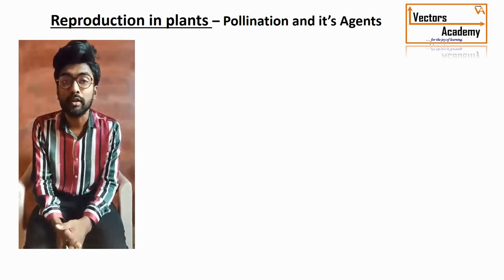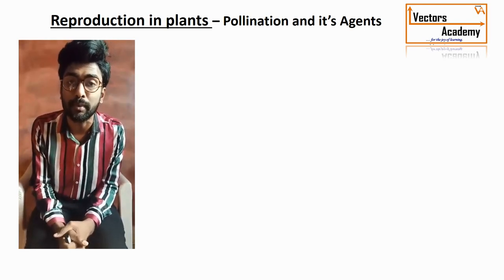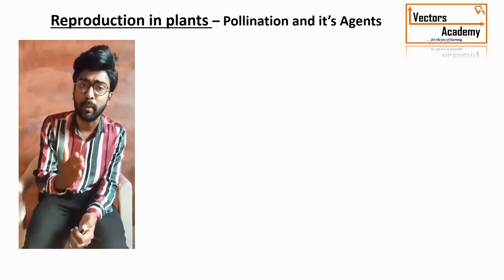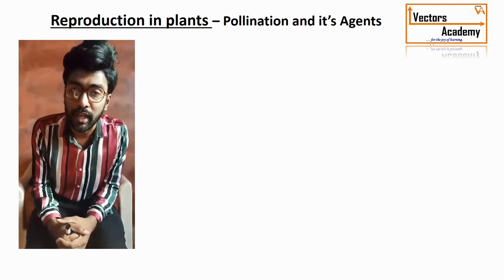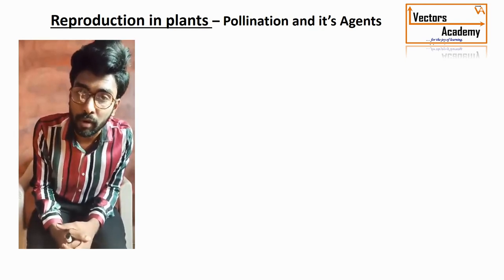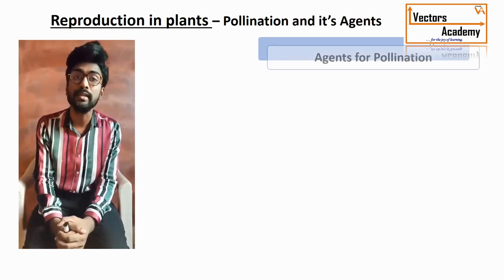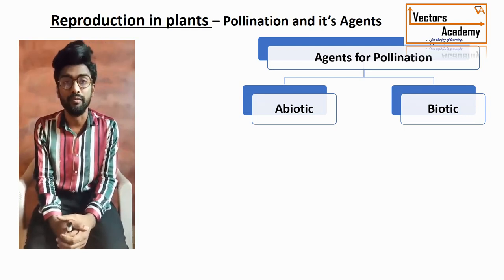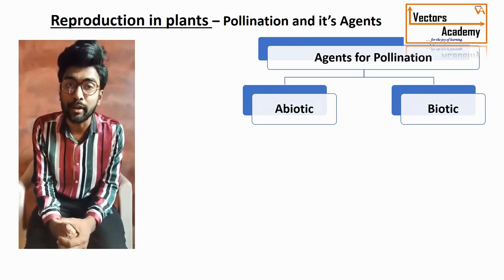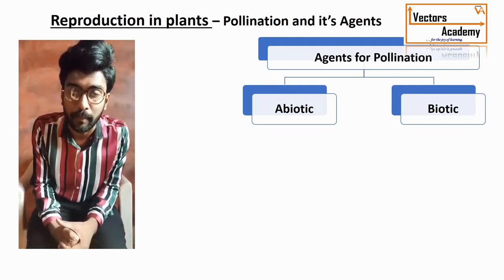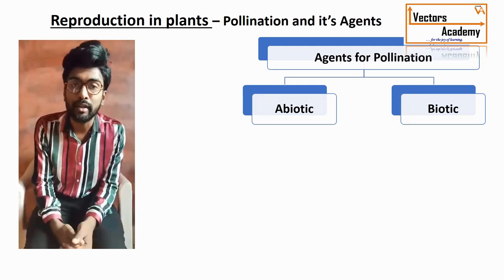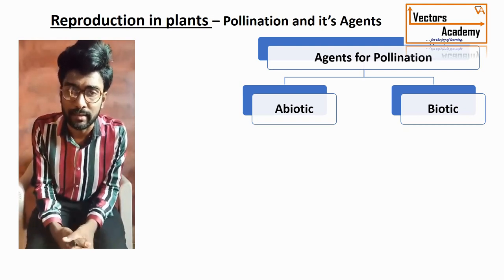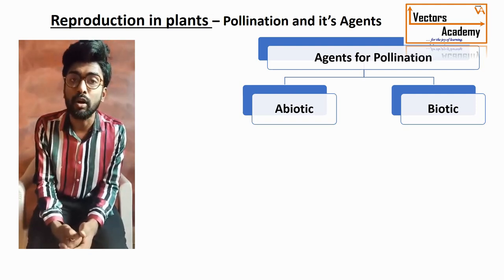Now let's talk about the different agencies responsible for pollination. The agencies required for pollination are of two important types: abiotic agencies and biotic agencies. Abiotic means non-living — generally includes air, wind, water, etc. Biotic factors are living factors such as insects, birds, bats, snails, etc.